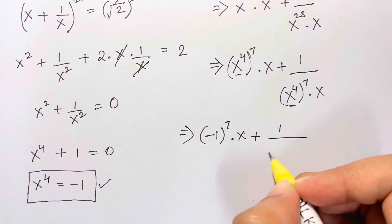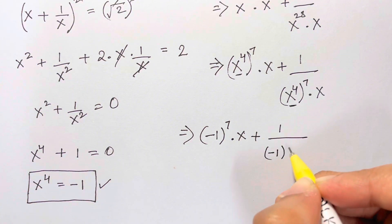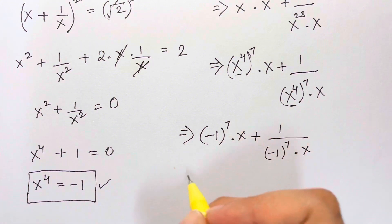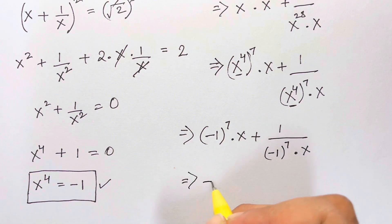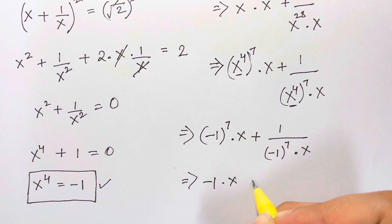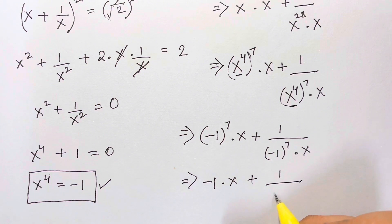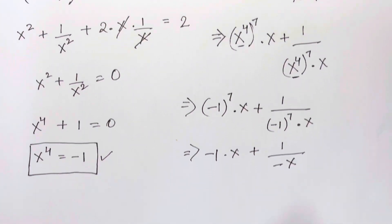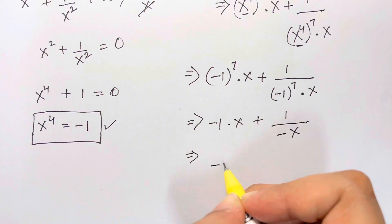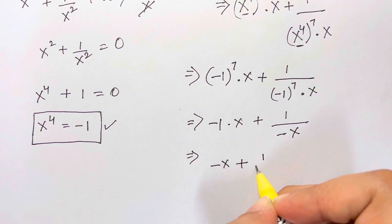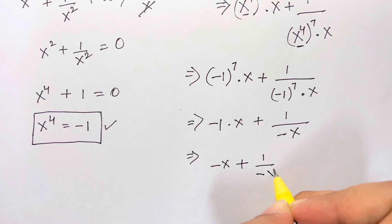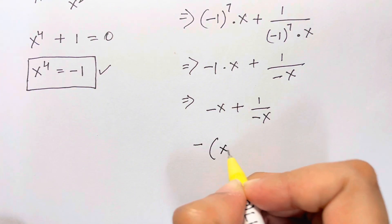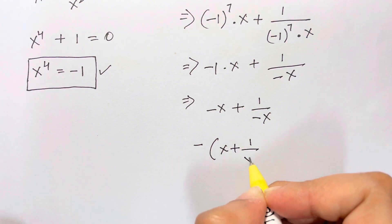Since (-1)⁷ = -1 (odd power), this becomes -1 · x + 1/(-1 · x), which equals -x + 1/(-x). Factoring out the negative sign gives us -(x + 1/x).